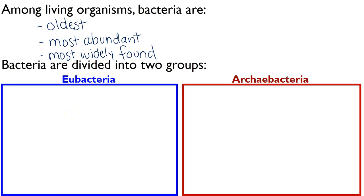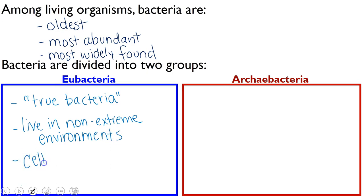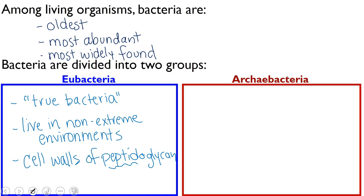Our first domain is the eubacteria. This word eubacteria means true bacteria, and typically includes the bacteria that live in non-extreme environments. These eubacteria also have cell walls that are made of a molecule called peptidoglycan. If we break down this word, you'll see 'peptide,' which has to do with amino acids and proteins, and 'glyca' or 'gluca,' which has to do with sugar. So we know it has to do with some kinds of peptides and sugars being put together.